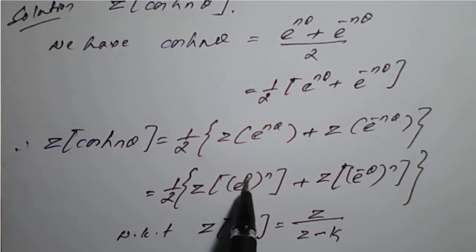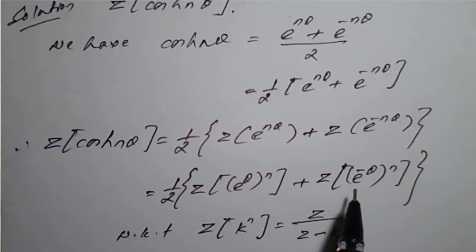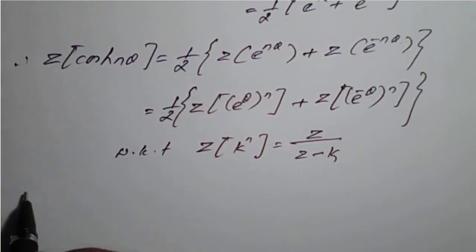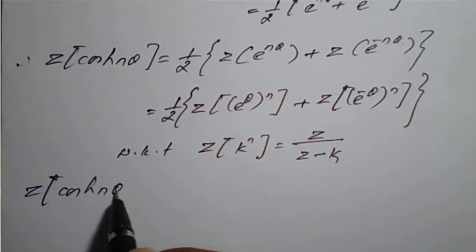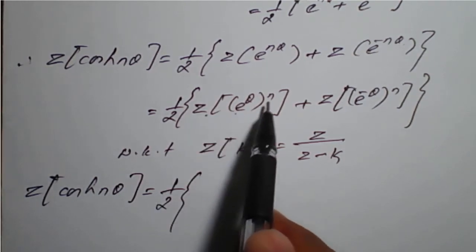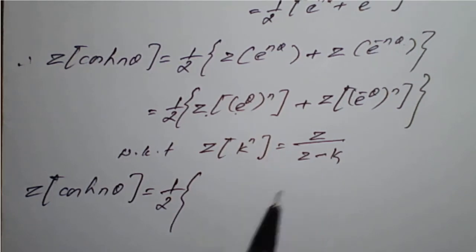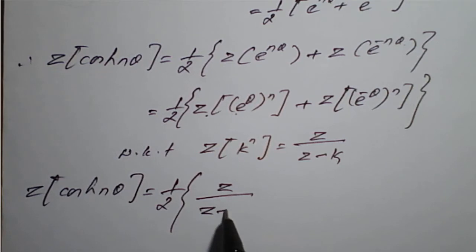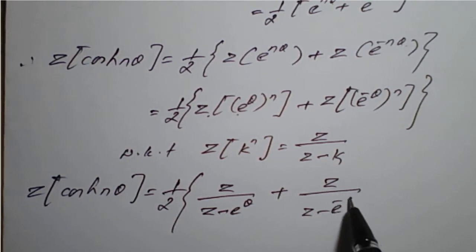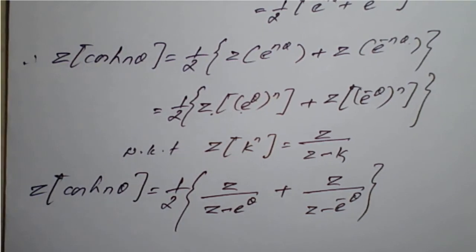Comparing, e^θ is replaced by k for the first term and e^(−θ) for the second term. Therefore, the Z-transform of cosh(nθ) equals 1/2 times [z/(z − e^θ) + z/(z − e^(−θ))].